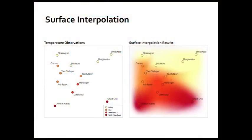Here's a temperature example I created using fake geography. Places like Hogarden and Niceberg are in the lowest, balmy temperature category, while Ghost Chili is in the 'Wish I Was Dead' heat category. On the left you see the network of sensor readings we have; on the right, you see what surface interpolation produces — a continuous map showing estimated temperatures between those measurement points.